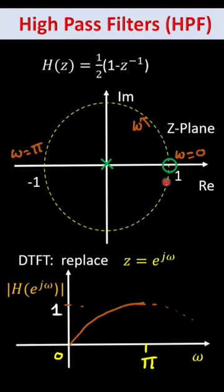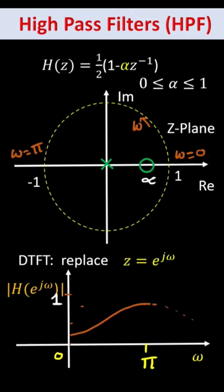For a high-pass filter, we have one zero at z = 1. If we have a zero at this point, then it is also a high-pass filter.